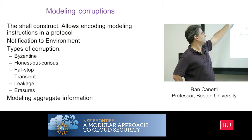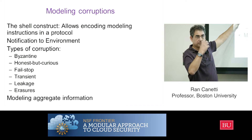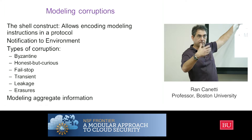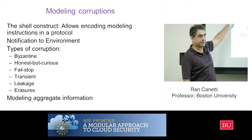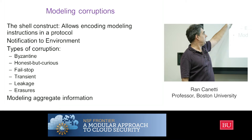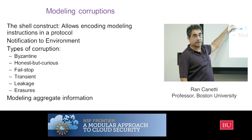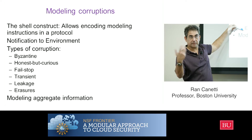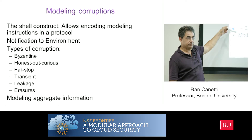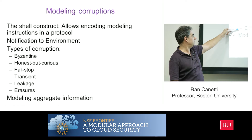We can also talk about transient corruptions — where after some time the adversary goes away and we stop being controlled by it. We can also talk about erasures, where we want to erase code and not tell the adversary things that we erased. So we can model erasures as well.